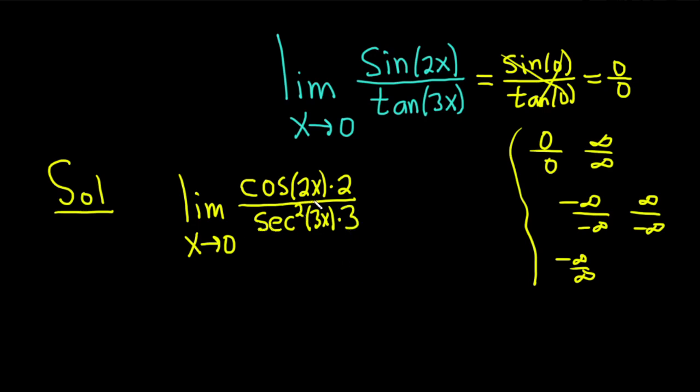At this point, we can plug in the number. So we drop the limit sign. We get cosine, 2 times 0 is 0, and we have a 2 here. Over, and then we have secant squared of 0 times 3.